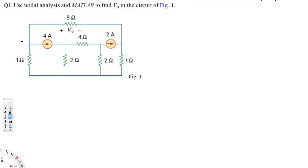Let's try this problem. This question is asking to use node analysis and MATLAB to find V-naught in the circuit of figure 1. This is the one we are trying to find. In order to do this, we have to know the voltage in each node, and we are going to use the node analysis method to find that out.